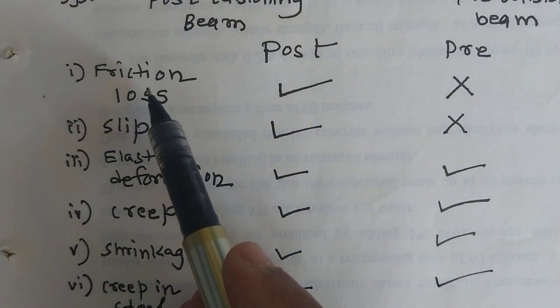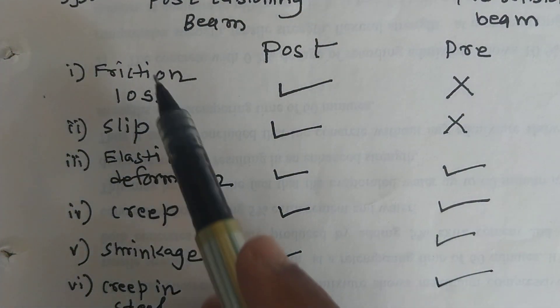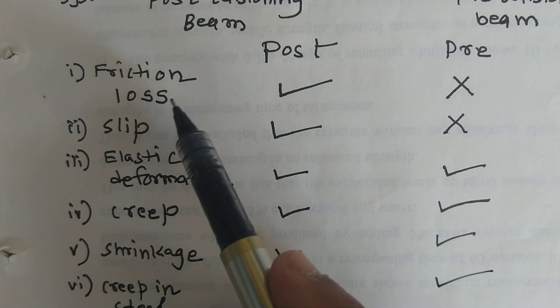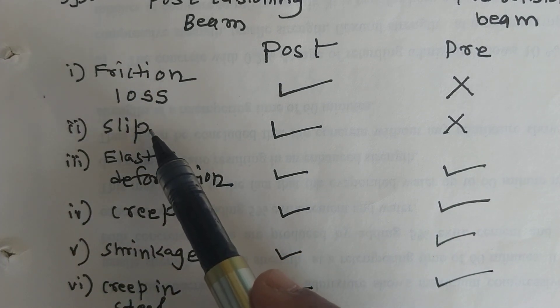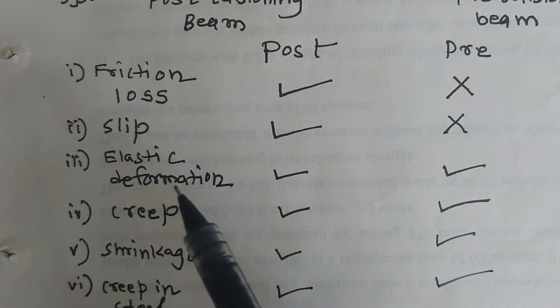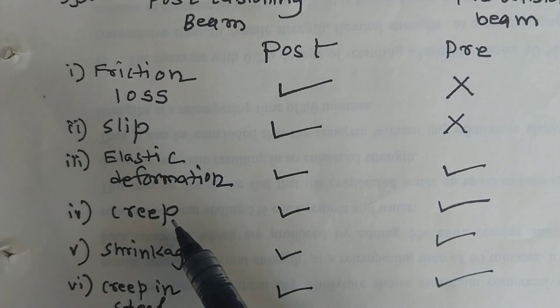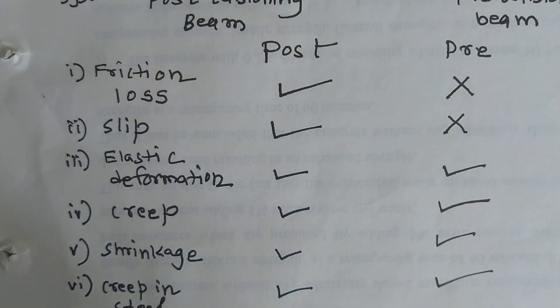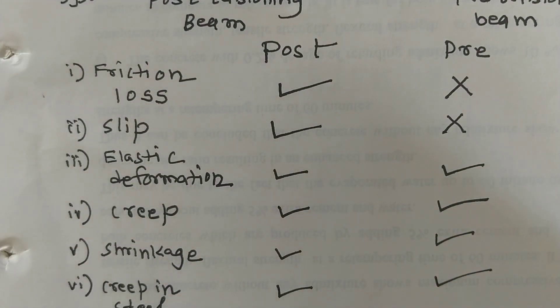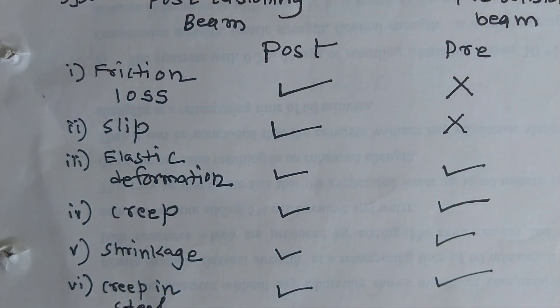So you have to find out these six losses: friction loss, anchorage slip loss, elastic deformation loss, loss due to creep of concrete, loss due to shrinkage of concrete, loss due to creep in steel this is called relaxation loss. So here completion of the second part of the unit.